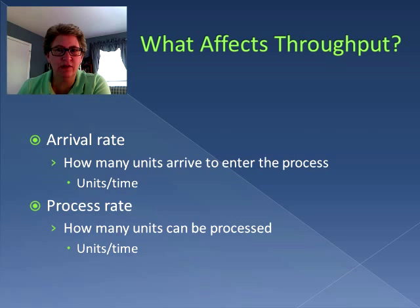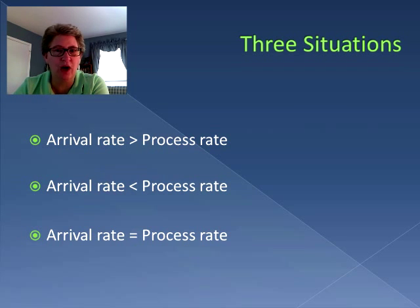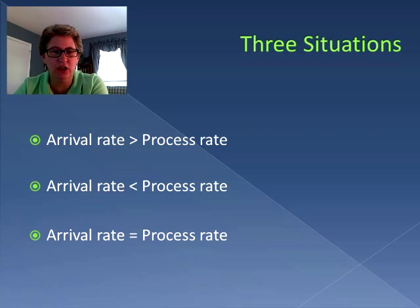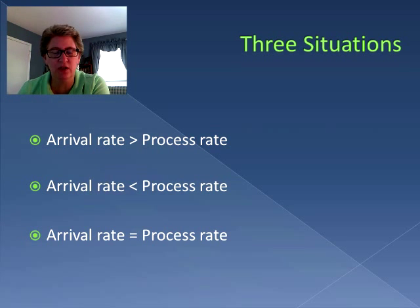Now there are three different situations. One is the arrival rate can exceed the process rate. The second situation is that the arrival rate is less than the process rate, which means the process is capable of handling more units than are arriving. And the third situation is when the arrival rate equals the process rate. We're going to look at each of these situations independently.